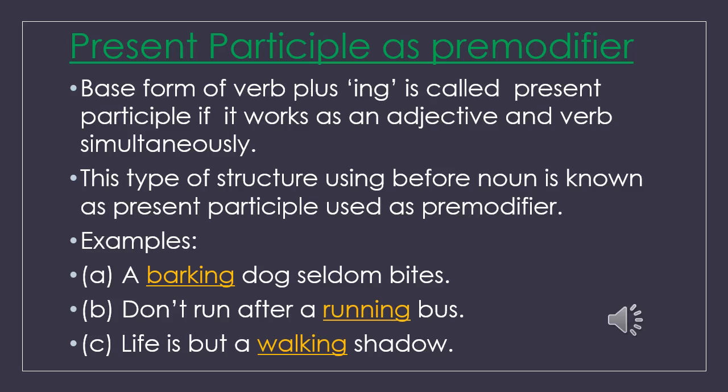Dear learners, now we will see participle as premodifier. Participles are of three types: present participle, past participle, and perfect participle. Present participle as premodifier: the base form of verb plus -ing is called present participle if it works as an adjective and verb simultaneously. This type of structure used before a noun is known as present participle used as premodifier. Example A: 'A barking dog seldom bites.' Example B: 'Don't run after a running bus.' Example C: 'Life is but a walking shadow.' Here, 'barking,' 'running,' and 'walking' are present participles used as premodifiers of 'dog,' 'bus,' and 'shadow.'